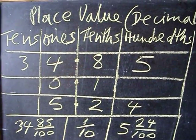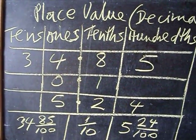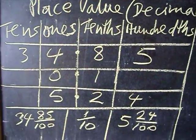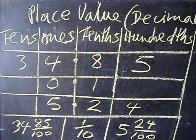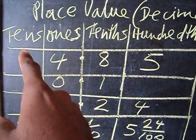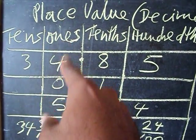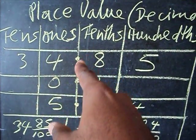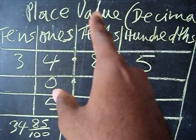The place value system for decimals - as you can see, before the point you have tens column, ones column, then the decimal point, and then you have tenths.